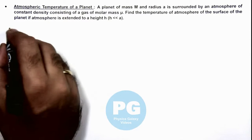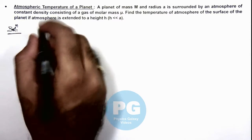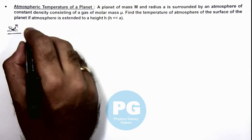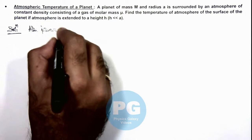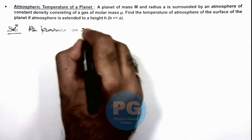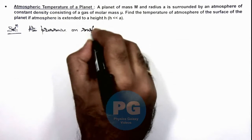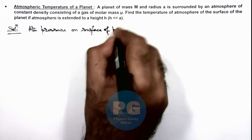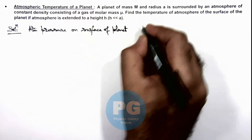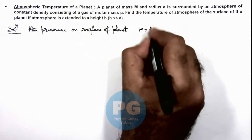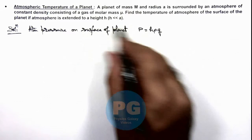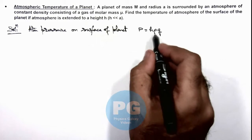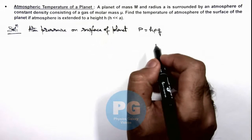So here, we can directly write the atmospheric pressure on surface of planet can be given as P = hρg, where h is the height up to which atmosphere is extended, ρ is its density, and g is the acceleration due to gravity.